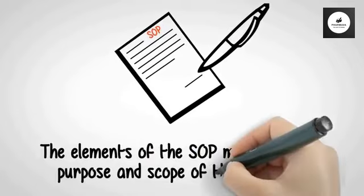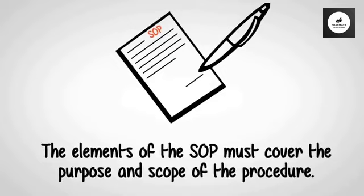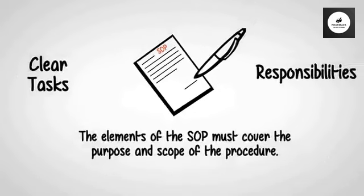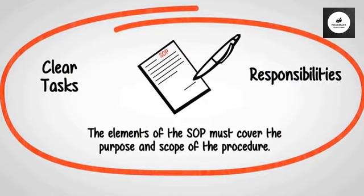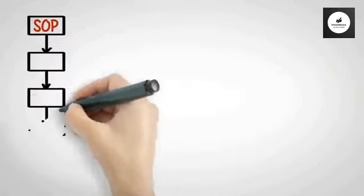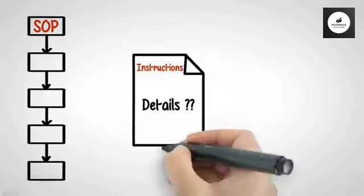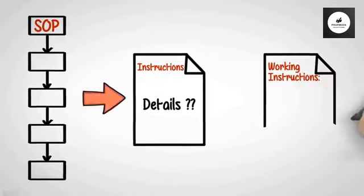The elements of the SOP must cover the purpose and scope of the procedure. The SOP must outline clear tasks and responsibilities. If any of the tasks need to be defined in greater detail, a working instruction can be used.